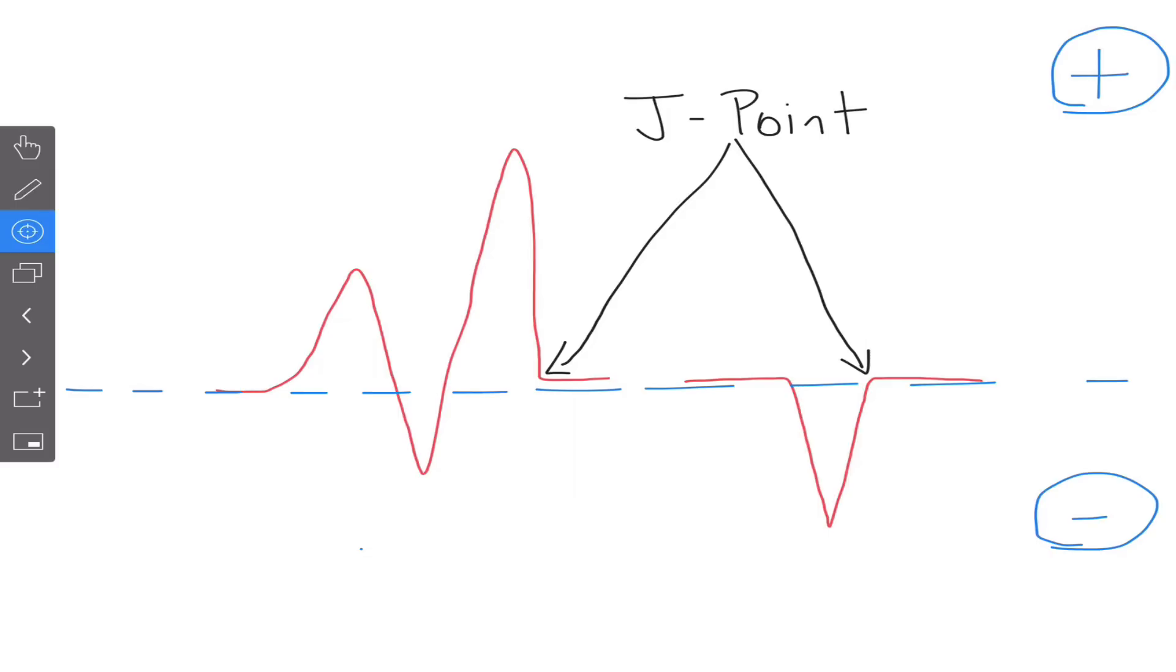So for a left bundle branch block, we have to have a QRS again greater than 0.12 seconds and then deflection before the J point should be negative or down. And you can also see rabbit ears in V5, V6, and even lead one.